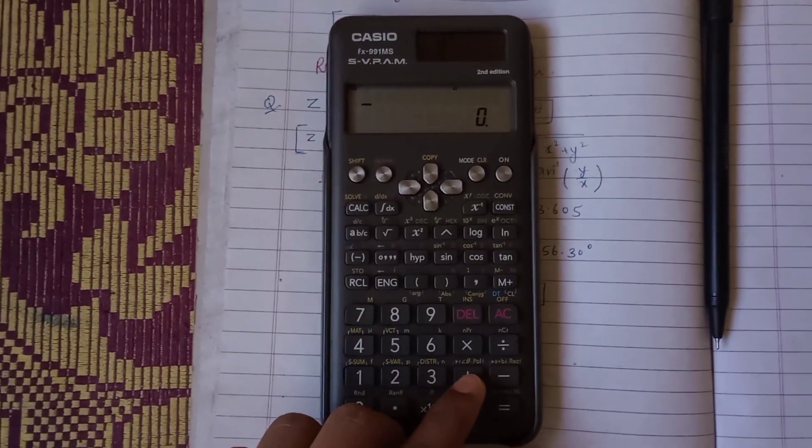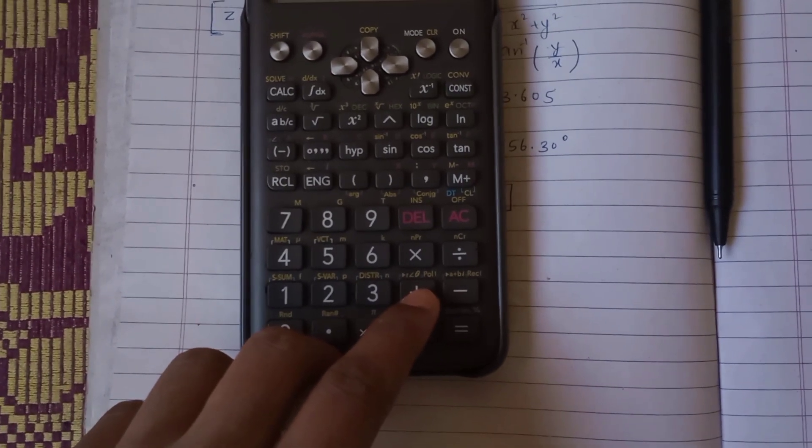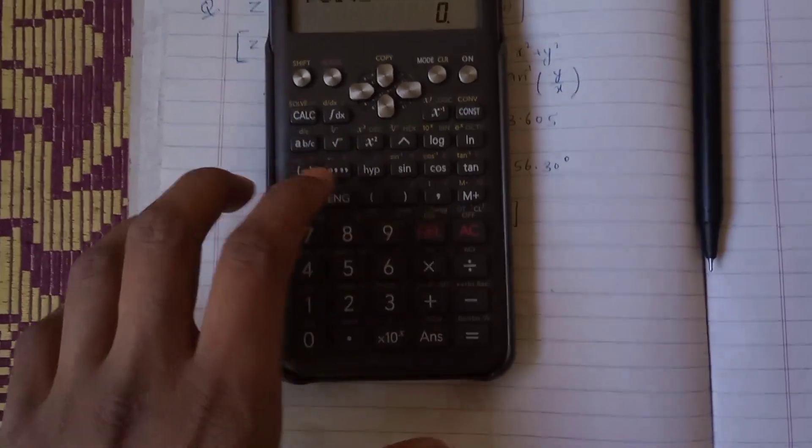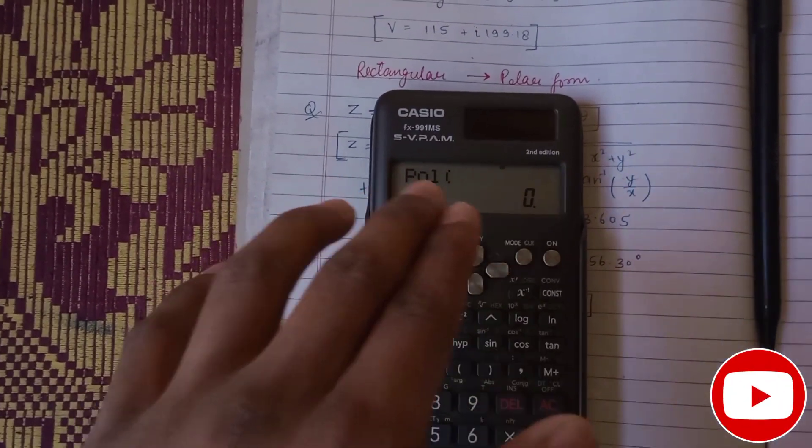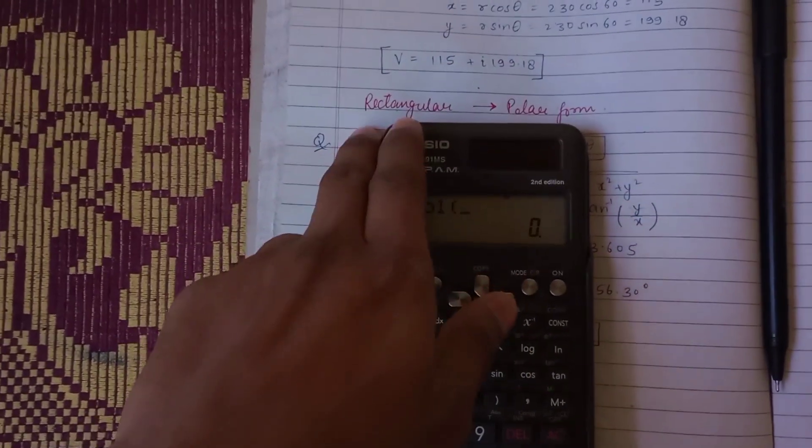Here is polar - it's showing Pol( for polar. We have to input the form which we need to calculate. Since we have rectangular form and need to calculate polar form, we input Pol(.